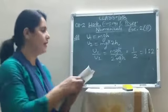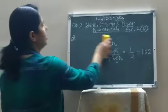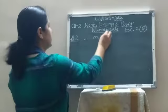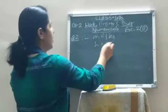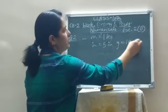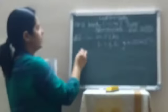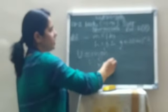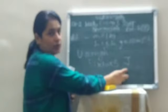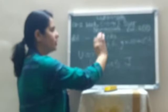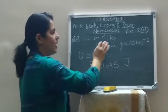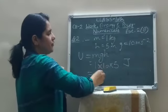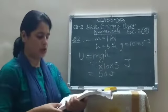Question number 2: find the gravitational potential energy of a 1 kilogram mass kept at a height of 5 meters above the ground. Mass = 1 kg, height = 5 m, g = 10 m/s². Using U = mgh: U = 1 × 10 × 5 = 50 Joule. The SI unit of potential energy is Joule, so U = 50 J.